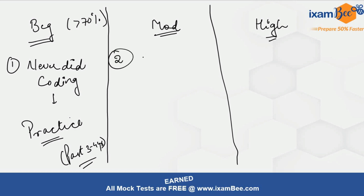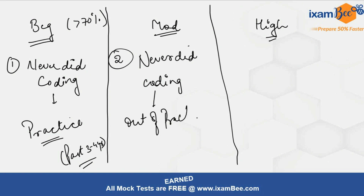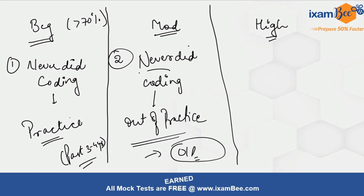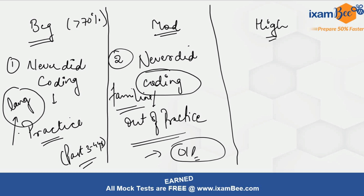The second category — moderate level — are people who also never did coding and are currently out of practice, but they are in touch with the concepts. They can get themselves involved with coding questions. They know how input/output questions work, they are familiar with the code, and they understand what the language looks like. They know the language variables but only lack actual coding skills.